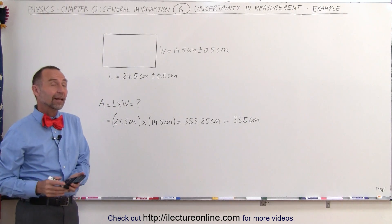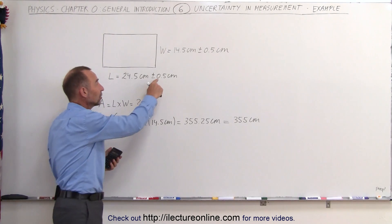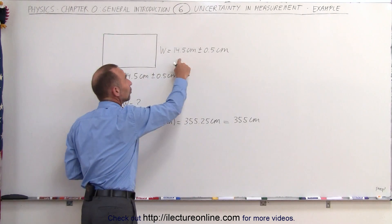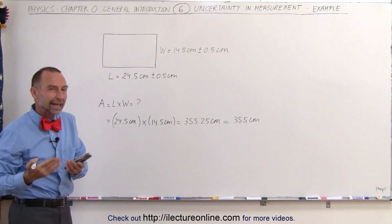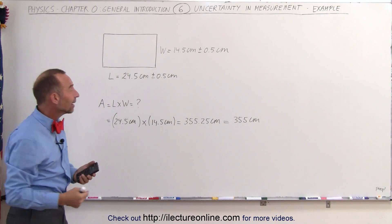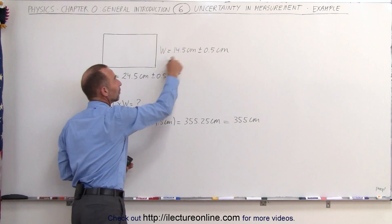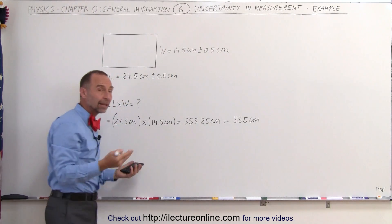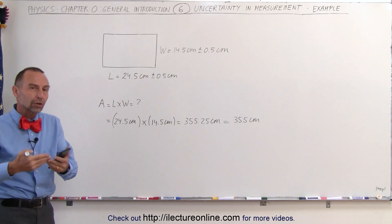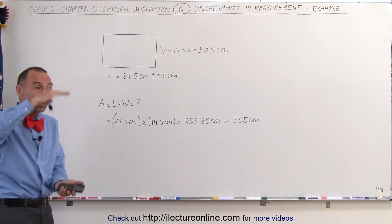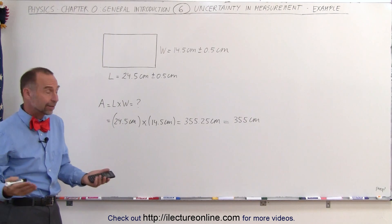The way we can figure that out is: first, add the uncertainty to each of the two numbers, then find the area — that would be the area on the high side. Then subtract the uncertainty from both numbers and multiply again — that would be the area on the low side — and then you know the range of the possible area.